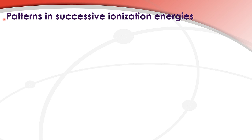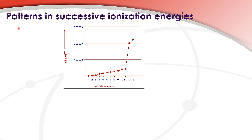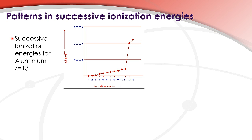Patterns in successive ionization energies. Here we have a graph showing the successive ionization energies for aluminium, atomic number 13. On the y-axis we have the ionization energy, which is the energy required to remove an electron from a gaseous atom, in kilojoules per mole. On the x-axis we have the ionization number. So let's take a look at this graph.